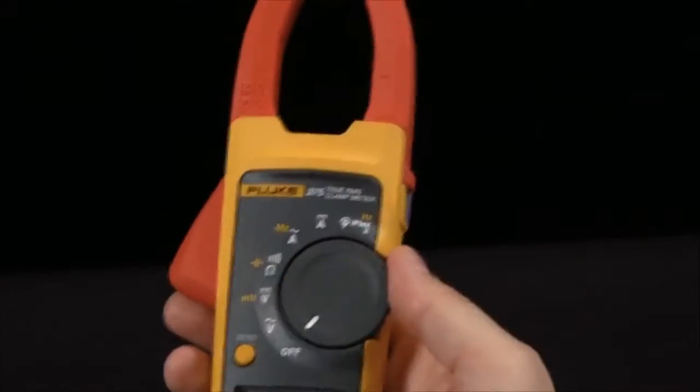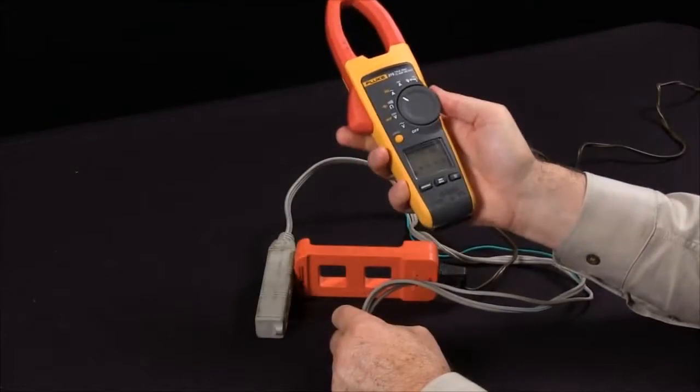How do I measure the current flow going through a power cord and out to a load? Let's set the clamp meter to read AC amps.